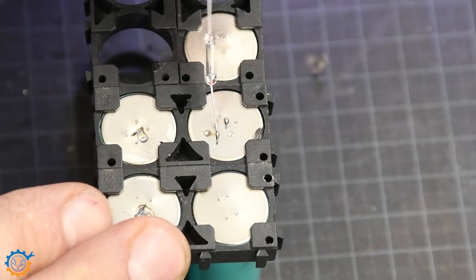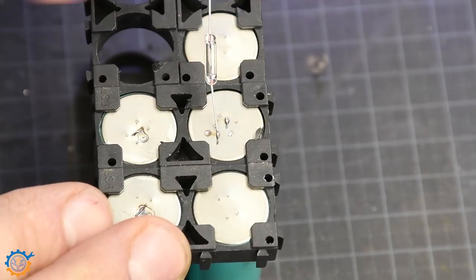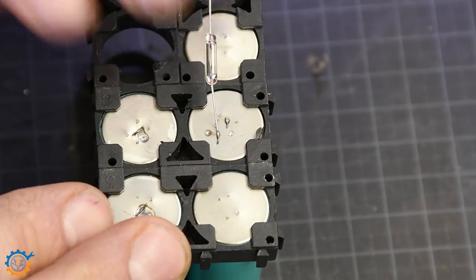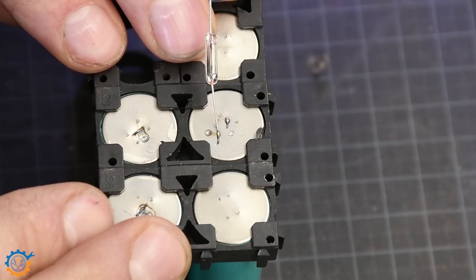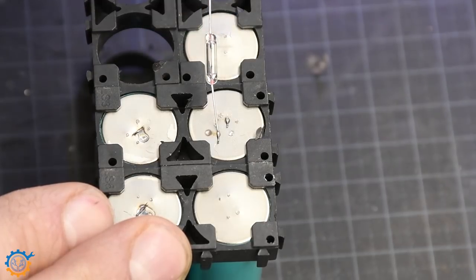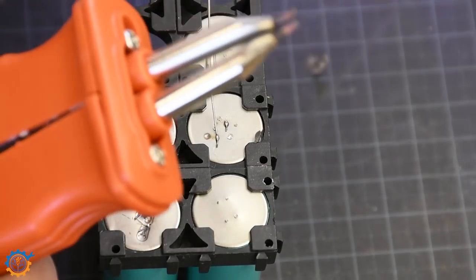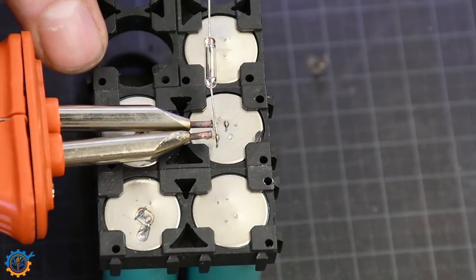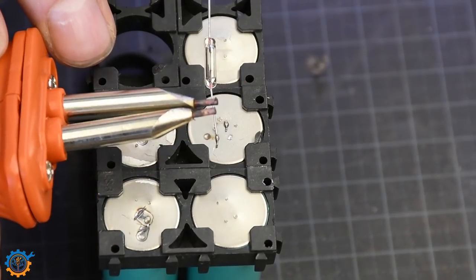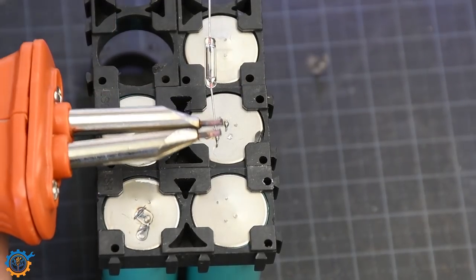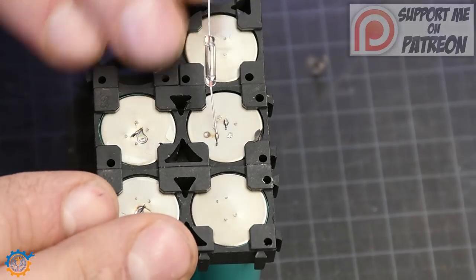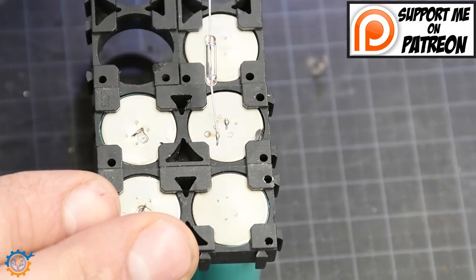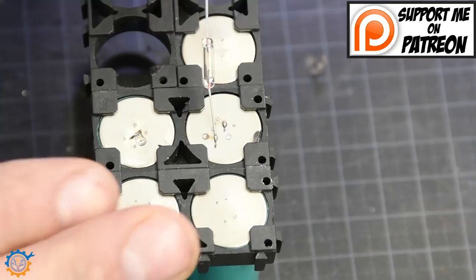But what you need to be aware of is that you cannot spot weld this against a copper bus bar. That won't work very well. If you look at those tips, they're copper as well, those that we have here. So basically it won't work. This only solves half the job because you still need to solder it to the copper bus bar, but with the proper iron that's not a problem.